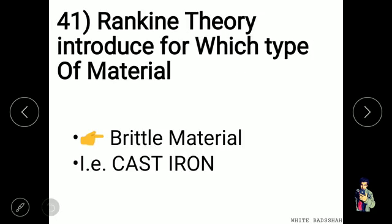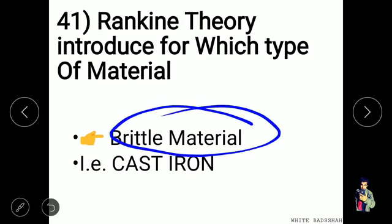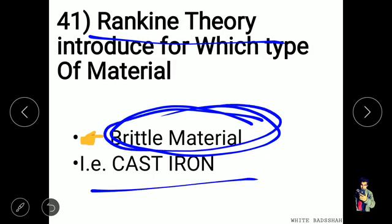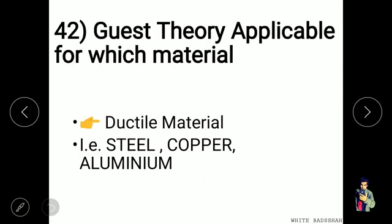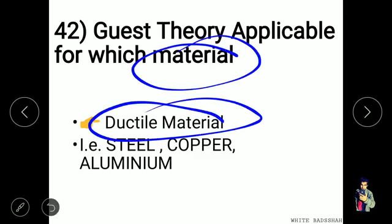The Rankine theory is introduced for brittle materials, for example cast iron. The Guest's theory is applicable for ductile materials. Examples of ductile materials are steel, copper, and aluminium.